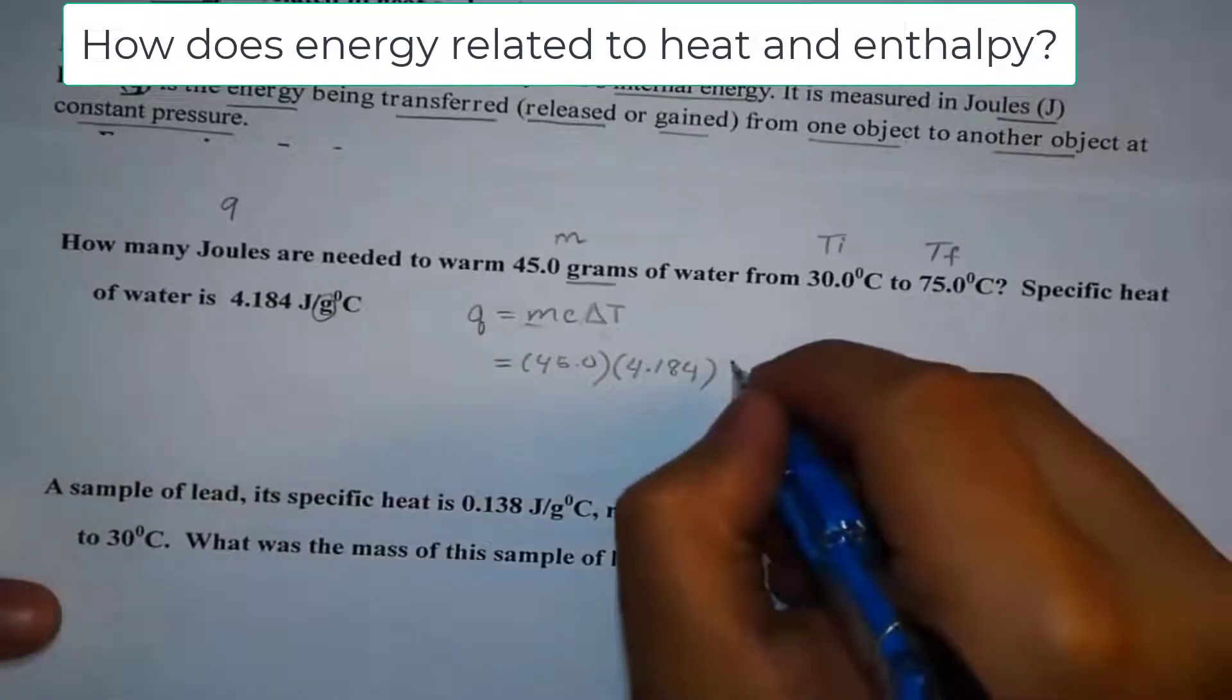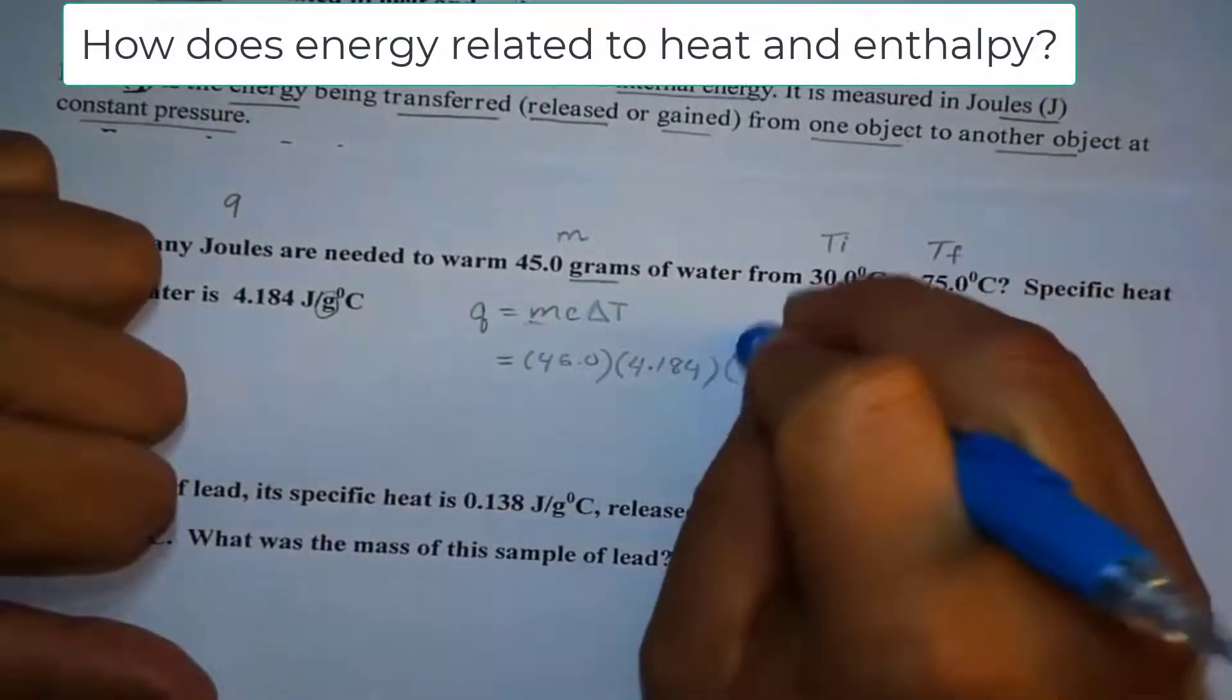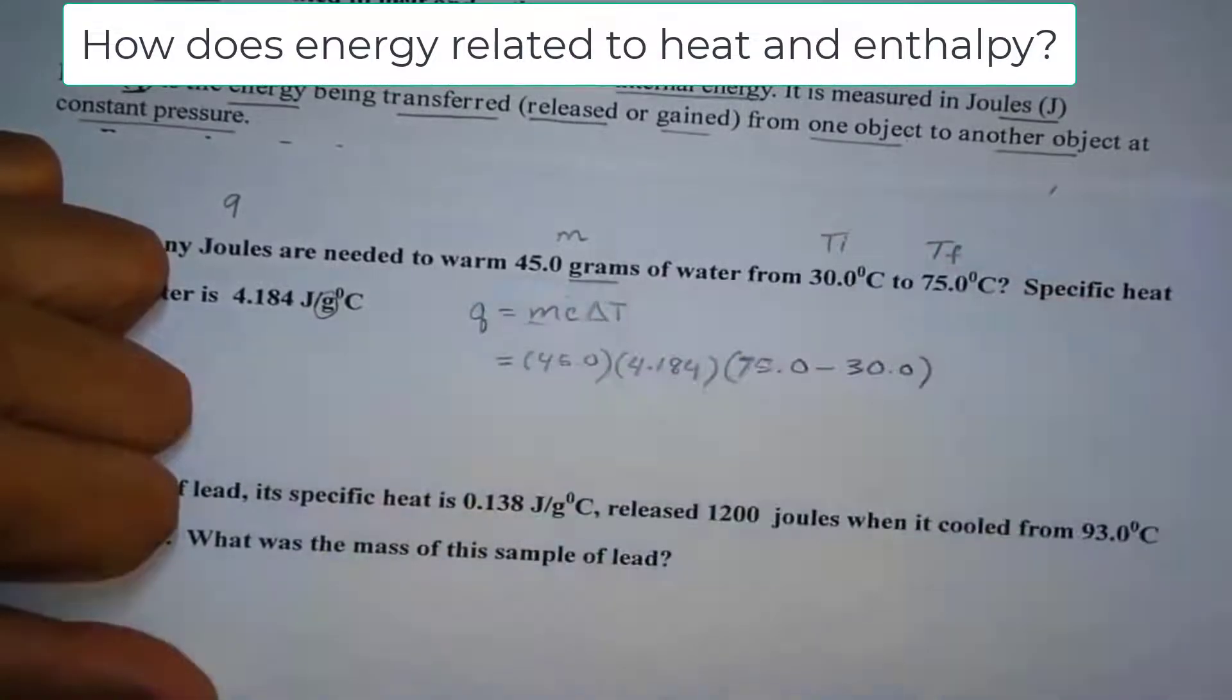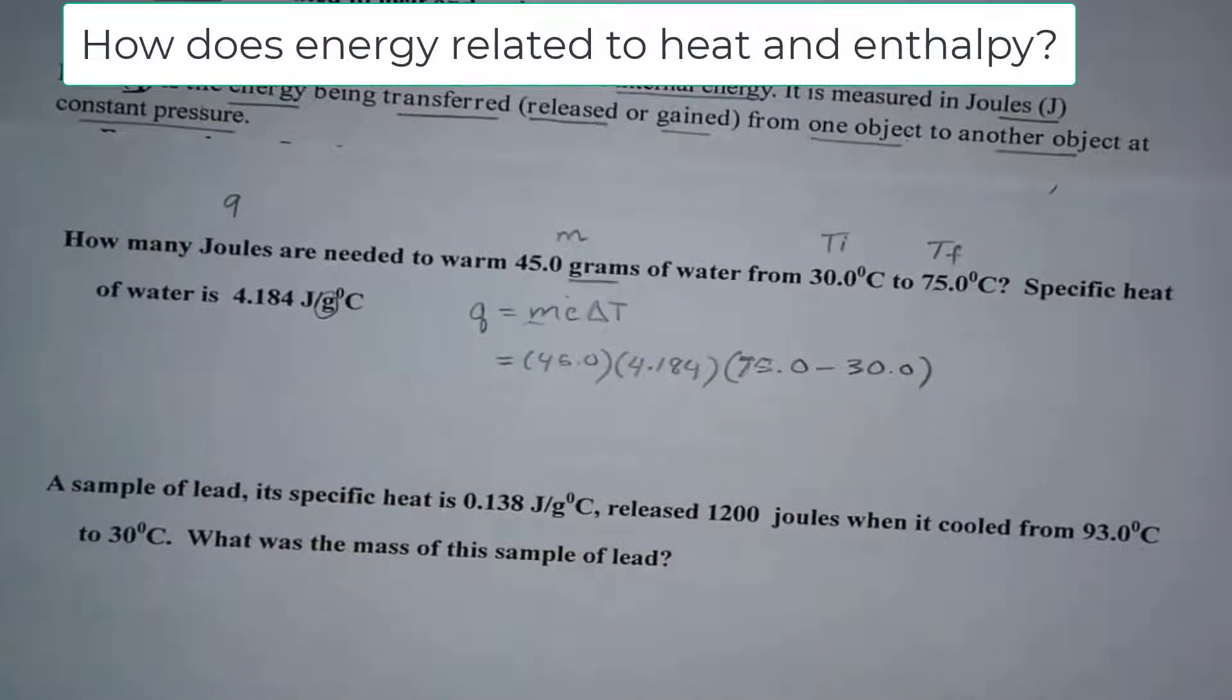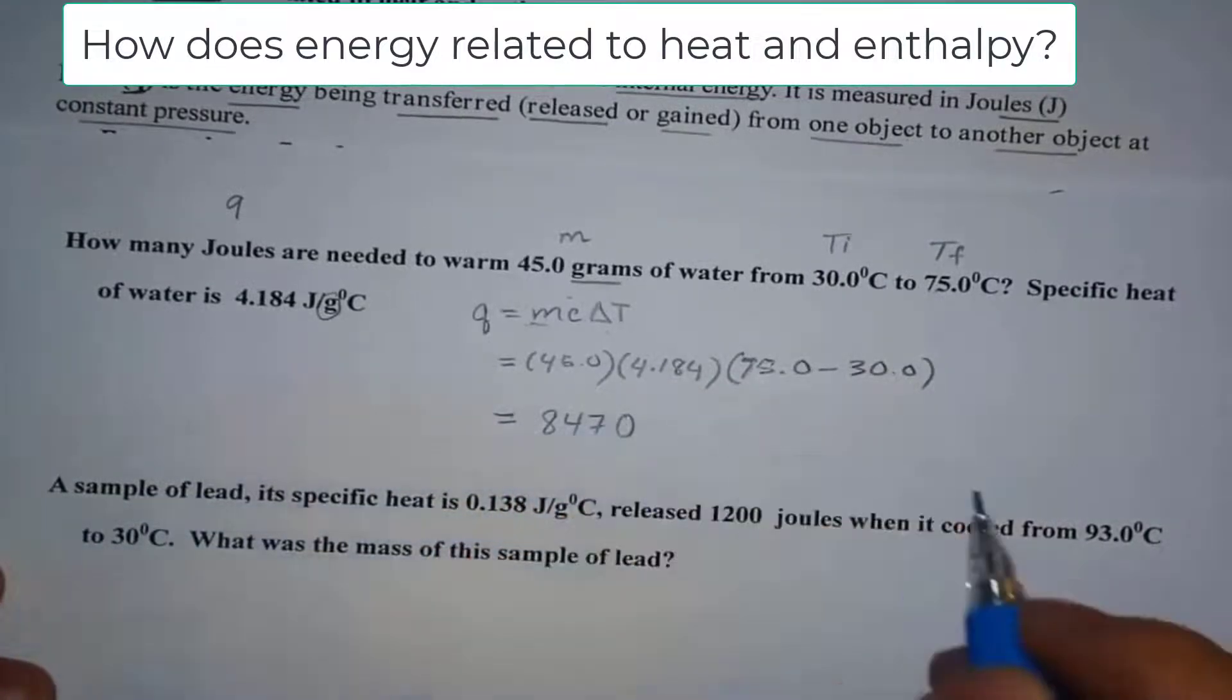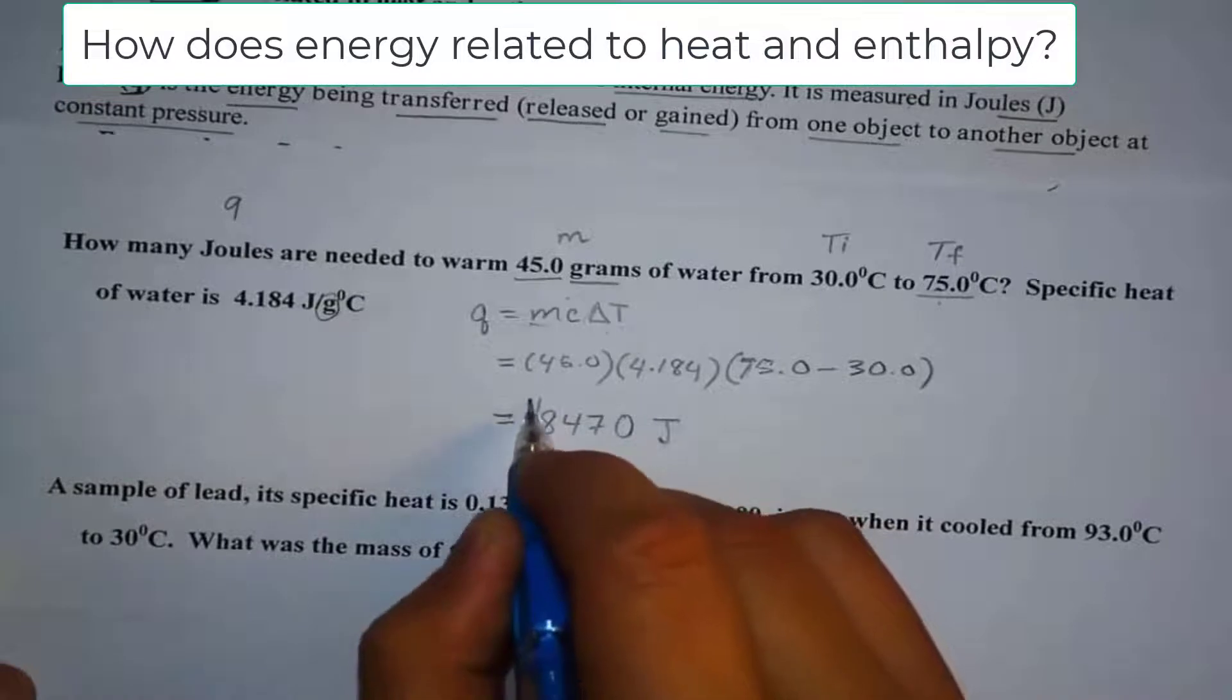And then the last thing we have is delta T, which is T final minus T initial. In this case, we know exactly what it is already. The T final is 75.0. And the T initial is 30.0. And then all we have to do is just plug this into the calculator. Isn't that easy? So if you plug this into your calculator, what you have is 8470. And we want to keep three sig figs for our answer. So what is the unit for Q again? Of course, it's Joules. And there you go. That is your answer.